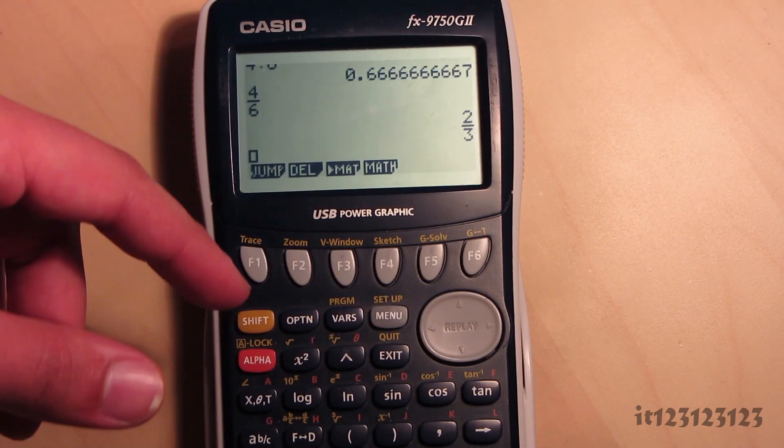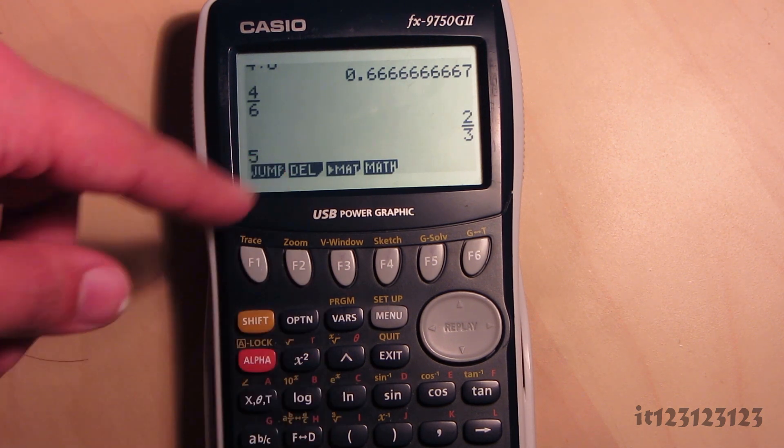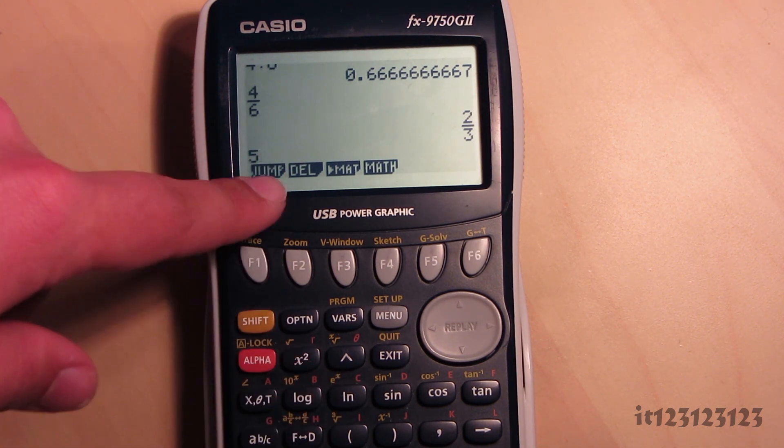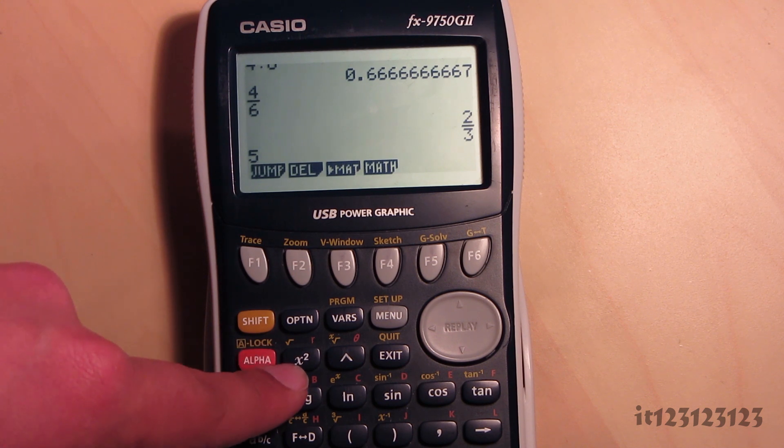Another thing that you can do is use the indices. So if we want 5 squared, type in 5, and now press the squared button here.